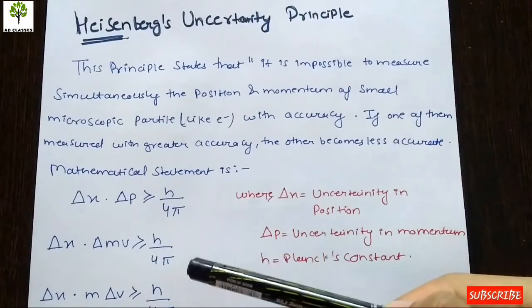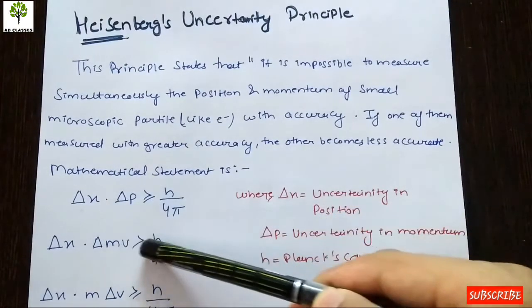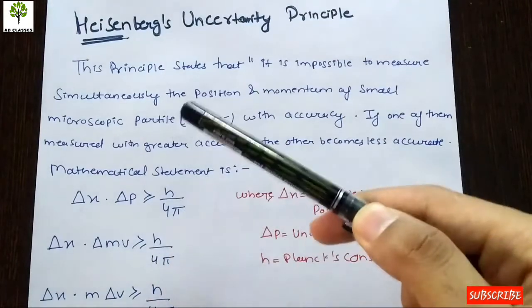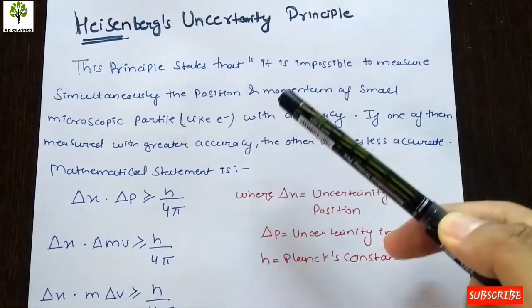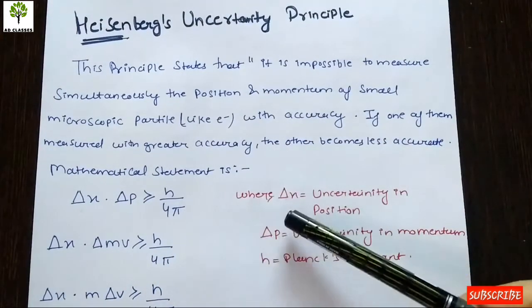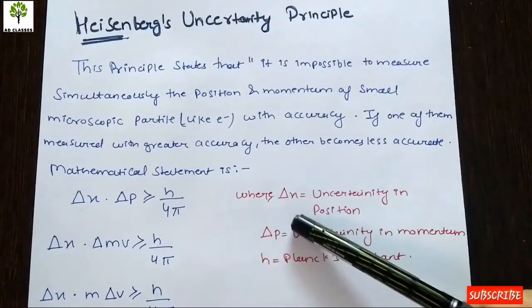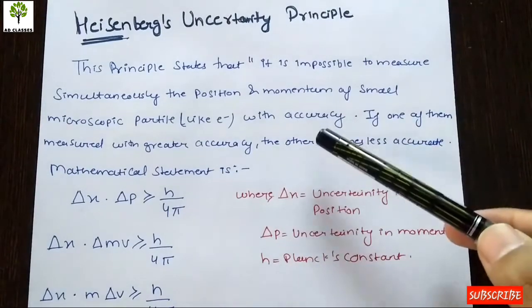We talk about delta x and delta p. We use delta because we cannot find out the exact accurate value — it represents the uncertainty in each measurement.